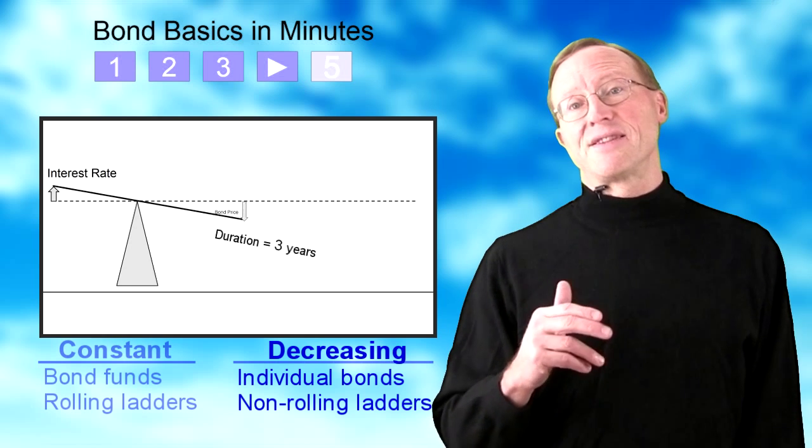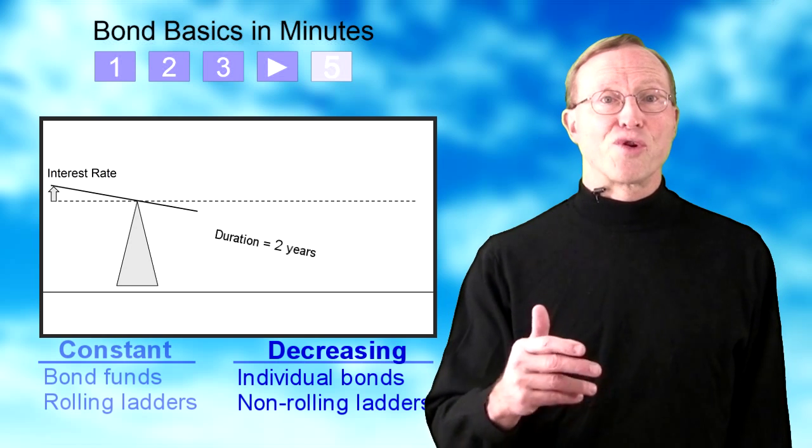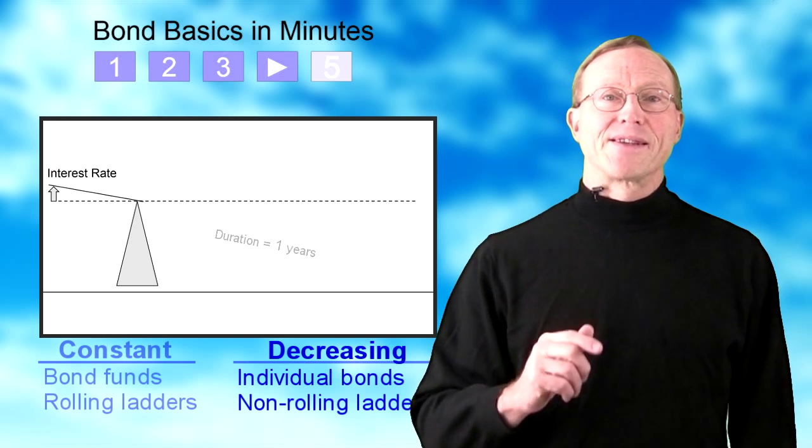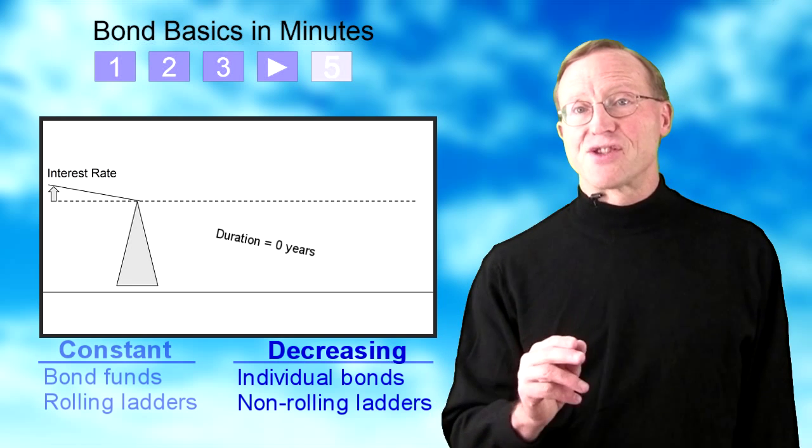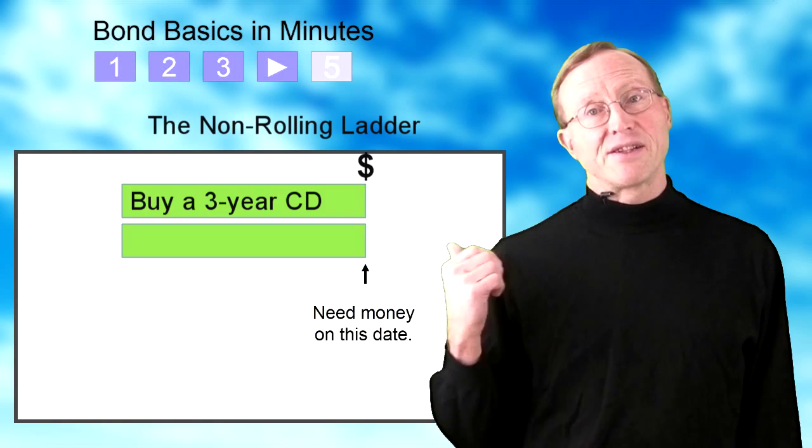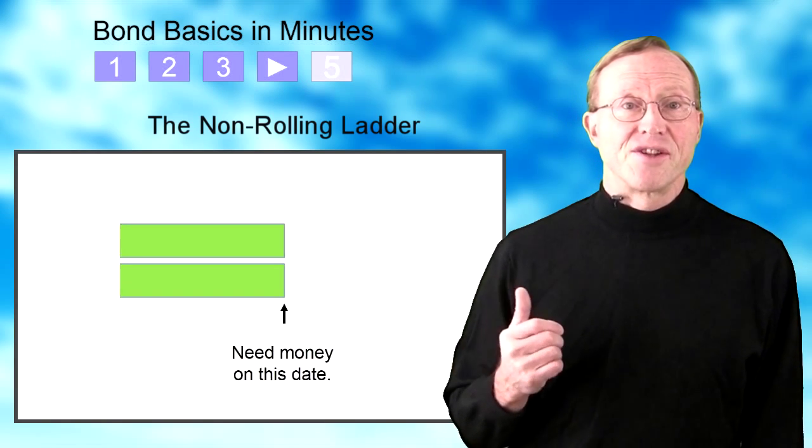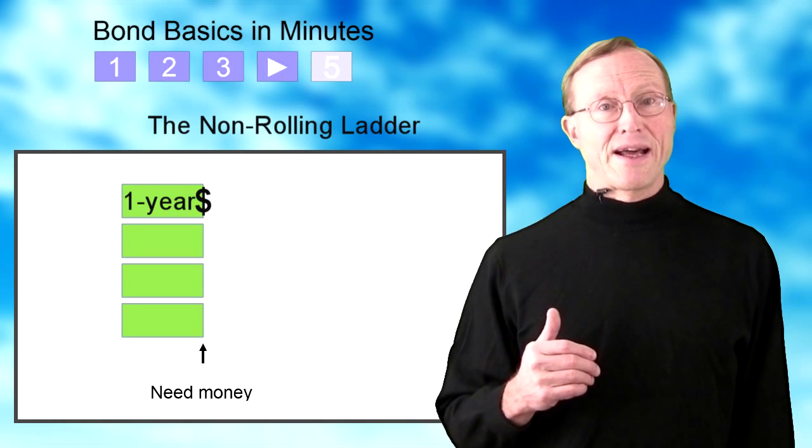This means that they become less sensitive to interest rate changes as they approach maturity. That makes them perfect to fund a date-certain future liability. In fact, you could continue to buy them for that target date, as I'm showing here. This collection of CDs or bonds is called a non-rolling ladder.